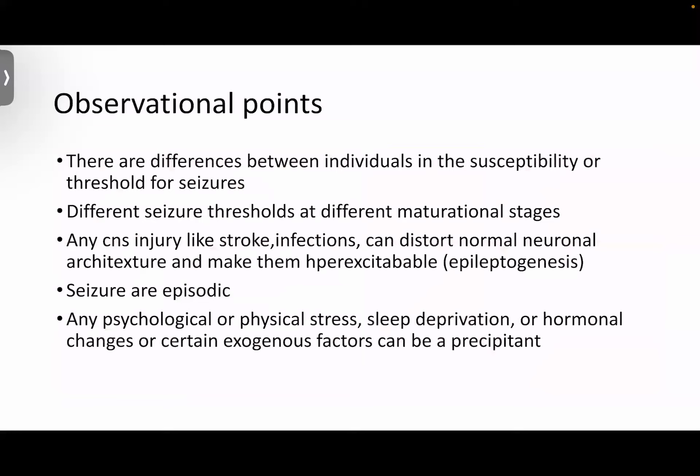To summarize: predisposing factors cannot be changed — they are familial. Epileptogenic factors — such as depressed fracture, tumor, or hemorrhagic stroke — indicate starting anti-epileptic therapy. Provocative factors must be ruled out in any seizure: check for electrolyte imbalance, acid-base imbalance, blood glucose, co-existing infection including meningitis, and any drug or alcohol intake. Precipitating factors do not have separate treatment but require patient advice to avoid emotional stress, sleep deprivation, and similar triggers.